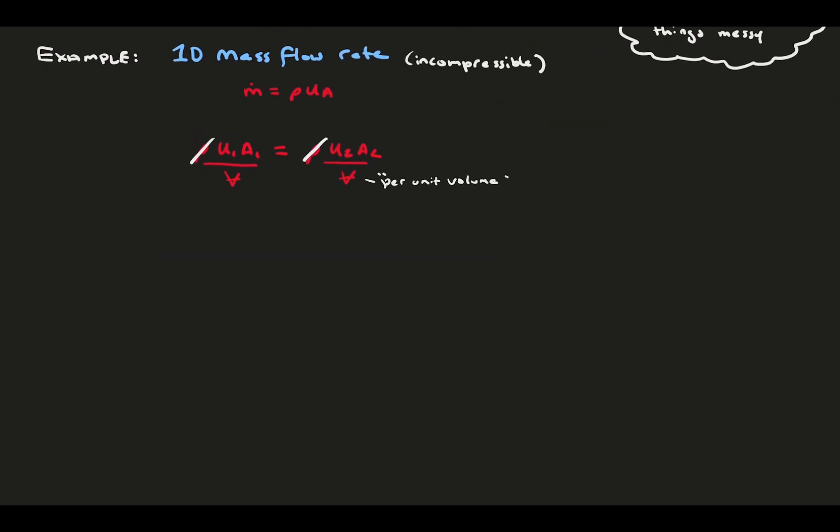Here, m dot in must be m dot out, so velocity times area must equal velocity times area out per unit volume. You may remember from our derivations of conservation of mass how this goes for Cartesian coordinates. Consider flow in the y direction. We define the area in and the area out, which are the same for our cube. And the volume is just a product of delta x, delta y, and delta z.